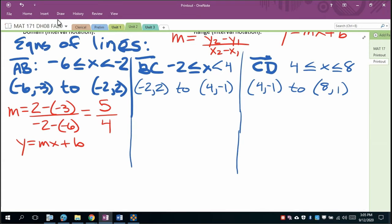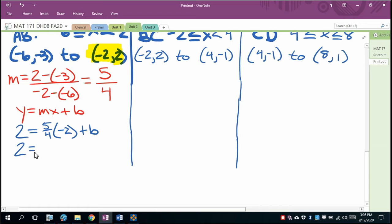So we'll do y equals mx plus b. And what we'll do then is we'll pick one of our points. I'll pick negative 2, 2. So what that means is the y is going to be 2, the m is 5 fourths, the x is negative 2, and then plus b. So basically what you're going to have to do here is solve this for b. So 2 will equal that's negative 10 over 4, negative 10 over 4 which is negative 2.5 plus b. So b equals 4.5 or 9 halves. So basically the equation here is y equals 5 fourths x plus 4.5 or 9 halves. It doesn't really matter which one you do it as.